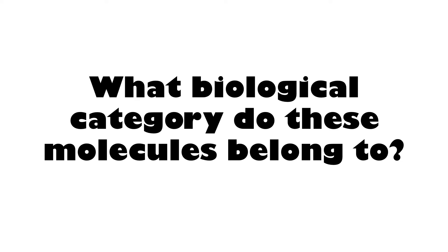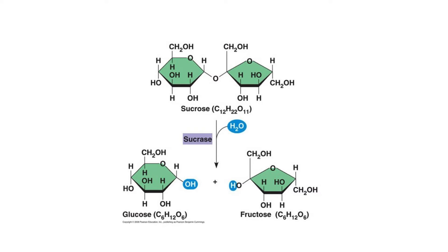The next question: what biological category do these molecules belong to? They look like soccer ball patches. Notice that the top molecule has two monosaccharides attached together, but they are not fused — there is an oxygen in between. Therefore these are carbohydrates. Steroids have molecules that are fused together, so keep those two straight. The top molecule is not a monomer but a polymer — it's a disaccharide. The ones at the bottom are not polymers but monomers; more specifically, these are monosaccharides.